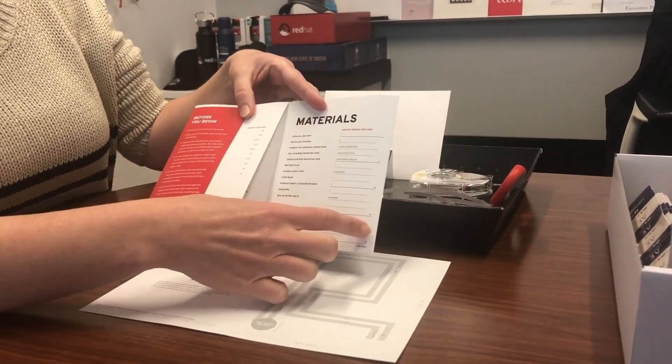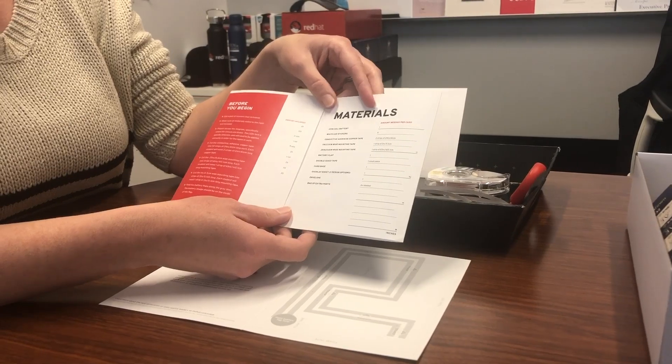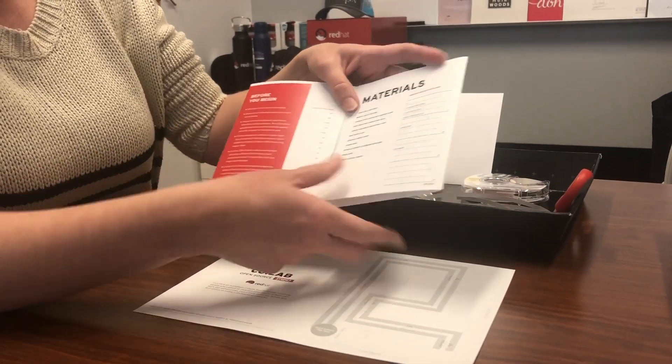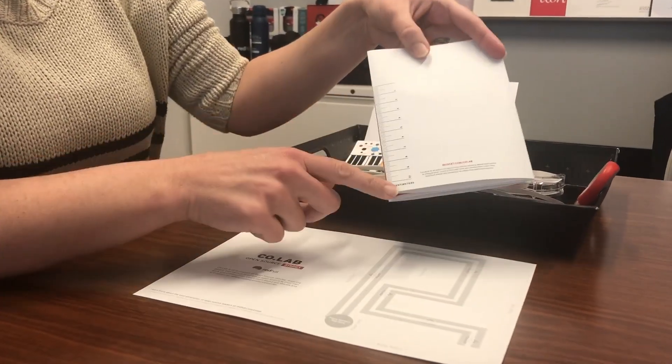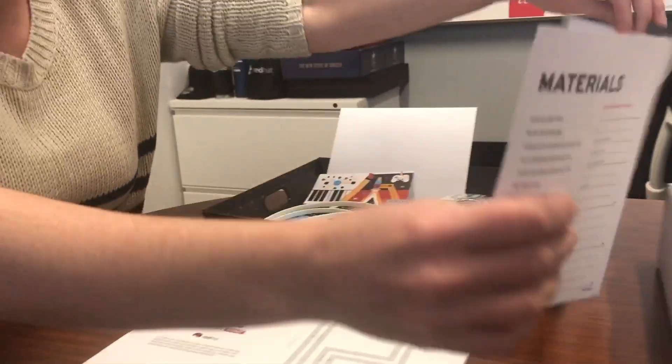The directions for what materials each student needs are over here. Several of them involve cutting strips of tape, the copper tape, or the mounting tape. You do have rulers in inches on this side and centimeters on this side if you don't have your own ruler handy. Once you've done that, you can start building the cards with your students.